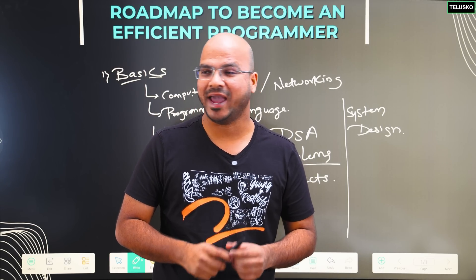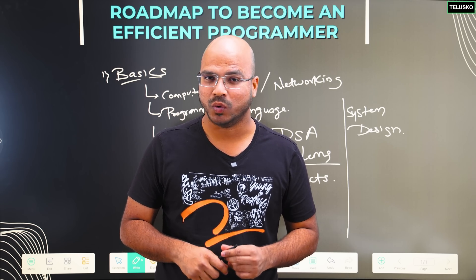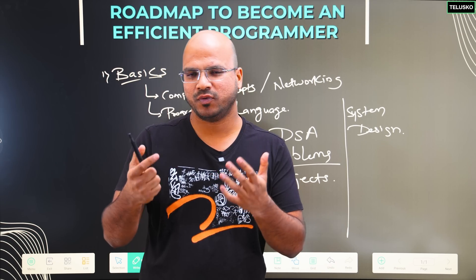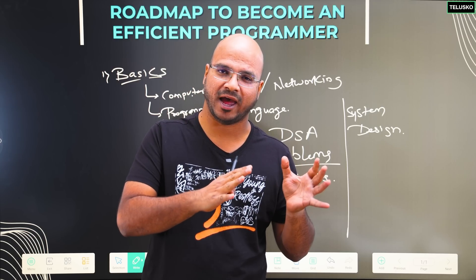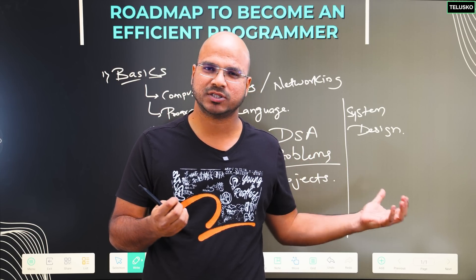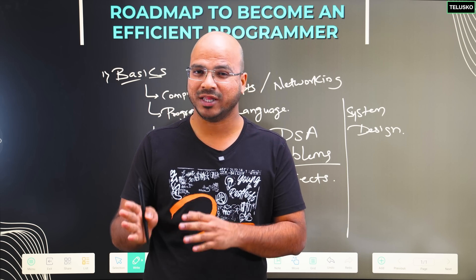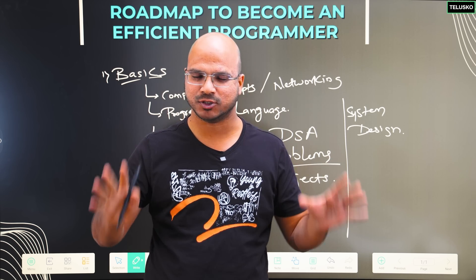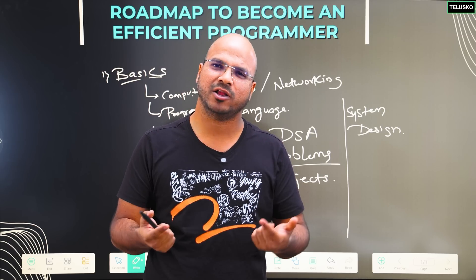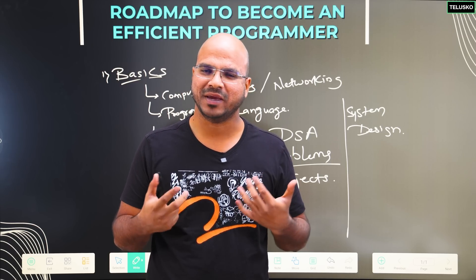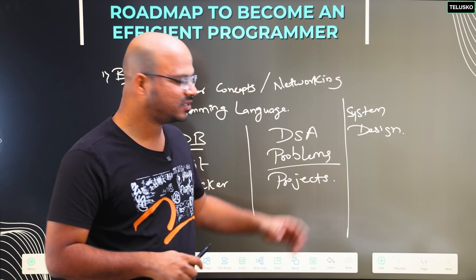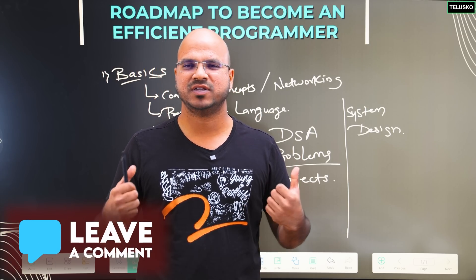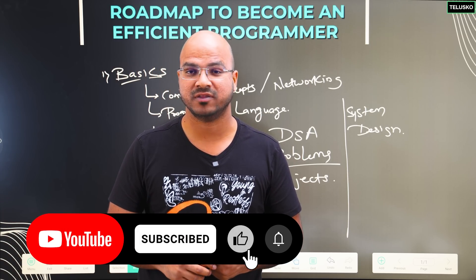If someone tells you that you can be a developer in three months, no — it takes time. It took me around six years to reach here, but things have changed and there are a lot more tools available now, so it may take one to five years depending on your speed and how much time you invest. Don't get into the mindset that you can be a developer in six months — you can be a developer, but you won't be efficient and won't be making efficient products. Learn all of this, and most of the videos I'll paste in the description so you can refer to them. Let me know in the comments if this type of video is helpful so I can make more in the future.